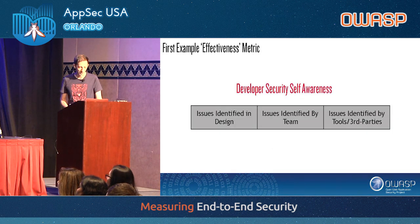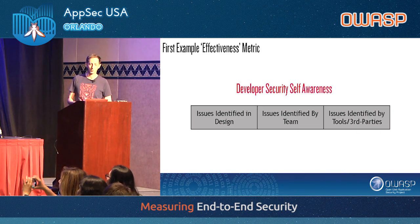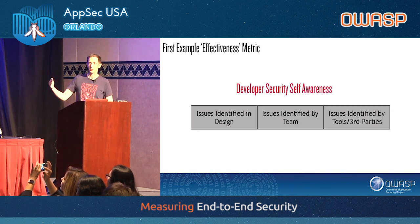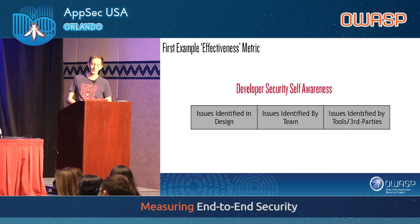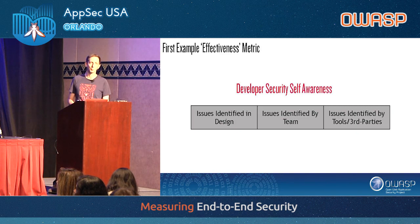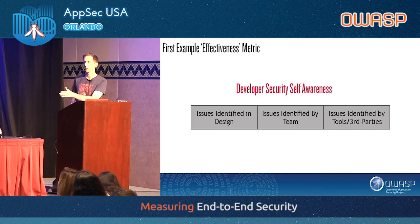So I came up with the concept of developer security self-awareness. We bucket reported issues into three ways: identified in the design or architecture during threat modeling, identified by the team during development before reaching production, or identified after by third parties or pen testers. As a team gets closer to day zero — finding issues earlier — we know they're getting more security mature. We can compare that to bugs found by bug hunters.